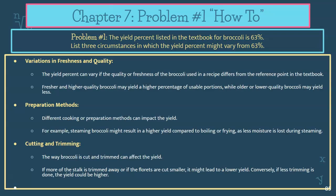Problem number one: the yield percent listed in the textbook for broccoli is 63%. What are three circumstances in which yield percent might vary? The universal yield percent for broccoli is 63%, but this will change based on variables you need to be aware of. First: variations in freshness and quality. When you buy broccoli, the fresher and higher quality crowns and stalks you buy, they might yield a higher percentage of actual edible usable portions.